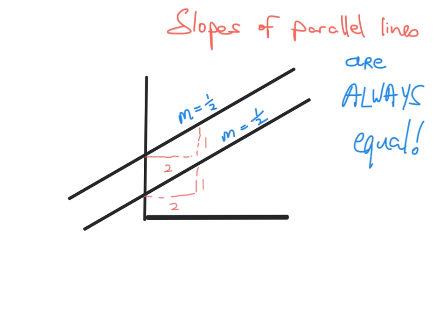The slopes of parallel lines are always equal. Think of the slope of a hill — if you have two parallel hills, they're going to have the same slopes. That's all you really need to remember: the slopes of parallel lines are always the same.